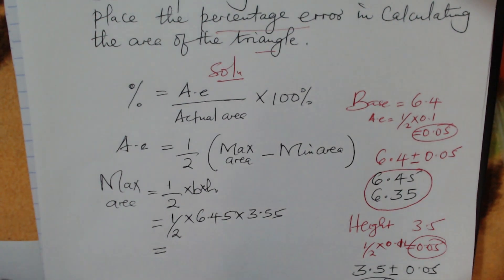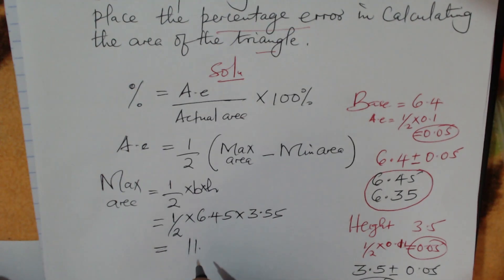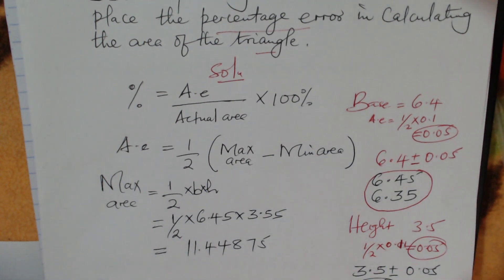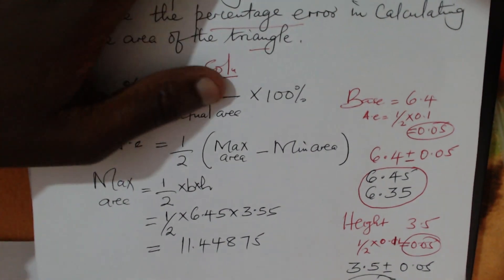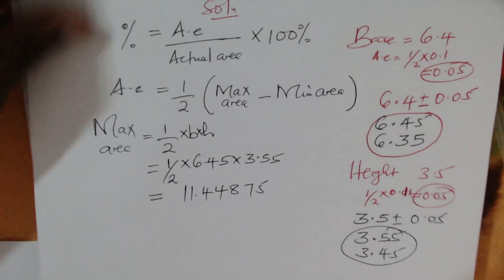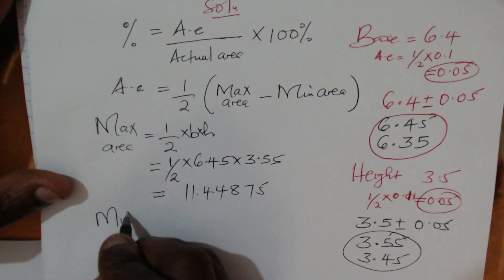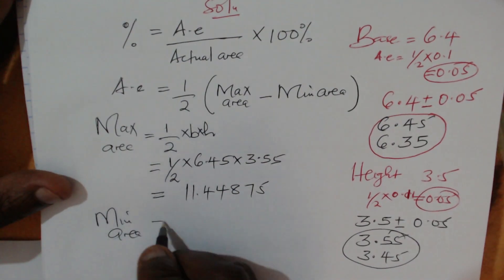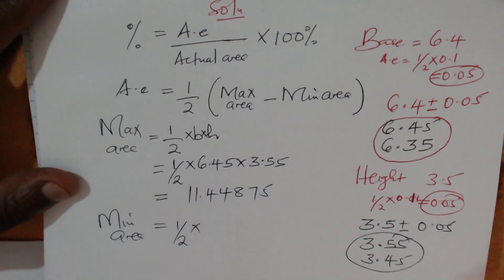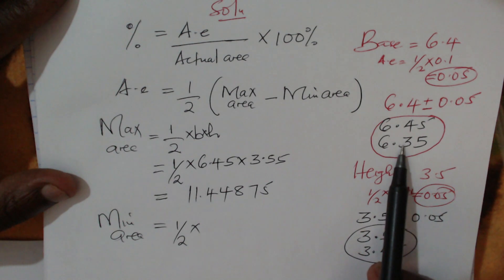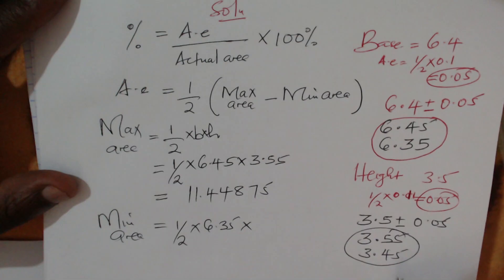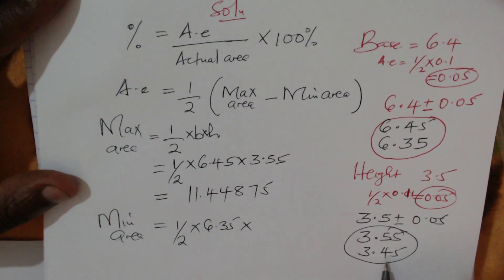Multiplying this out gives a maximum area of 11.44875. Now for the minimum area: one half times the lower limit of the base, which is 6.35, times the lower limit of the height, which is 3.45.